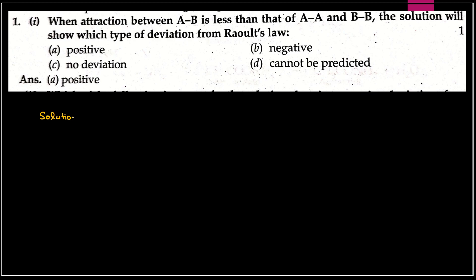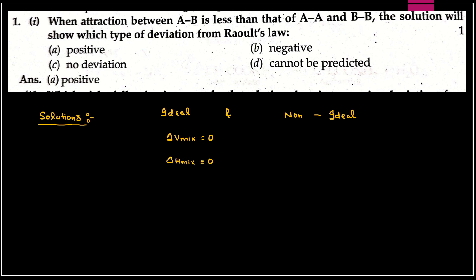Agar beta aapko Solutions ya chemistry ke Solutions chapter se ek number ka question mil raha hai, to there is a high probability ki wo ideal and non-ideal solution se aaya hai. In ideal solution, delta V mix is equal to 0, delta H mix is also 0, and the A-A interactions, B-B interactions and A-B interactions are equal.